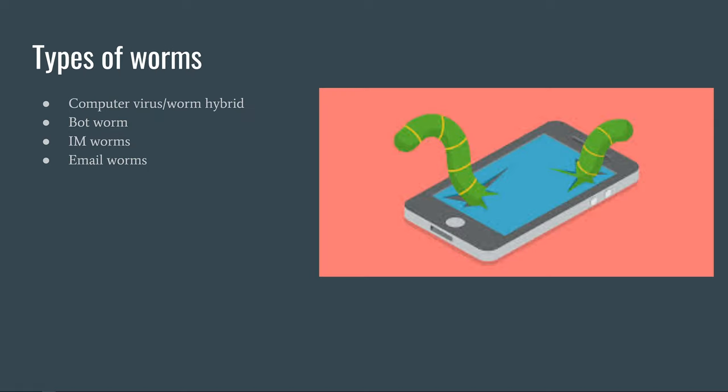There are many types of computer worms. A computer virus-worm hybrid is a form of malware that spreads similarly to a worm, but also modifies program code like a virus. Most modern viruses fall into this hybrid category. This form of malware is not always intentional, as a virus could attach itself to a worm already present on a host system and spread that way.